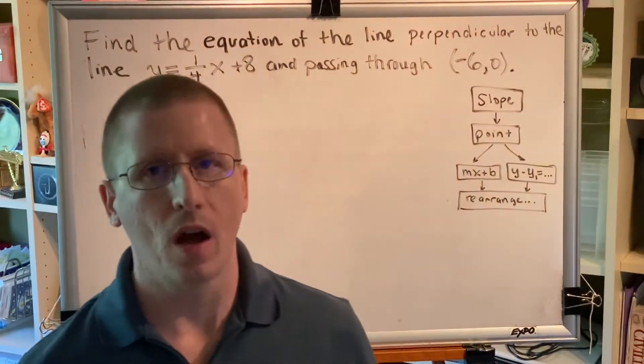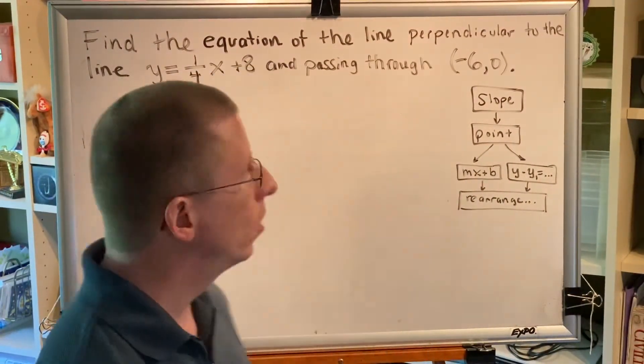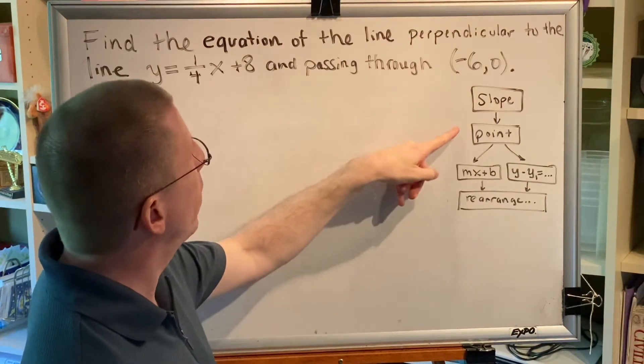Okay, we've been asked to write the equation of a line, so we need to think our way through the flowchart. First we need to get a slope, then we need to get a point.